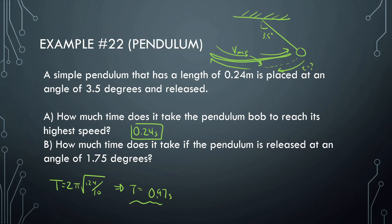Part B now says how much time it would take if the pendulum is released at an angle of 1.75 degrees. If we look at the formula for the period, we see that's L over g. We see that the amplitude or the angle has nothing to do with the formula. So it has no effect whether this is 1.75 or 3.5. The period will remain the same. So the time would also remain the same. This is also 0.24 seconds.